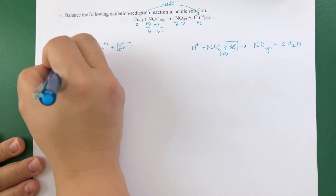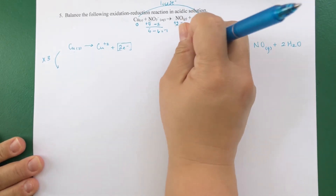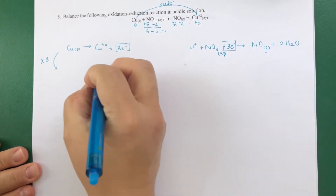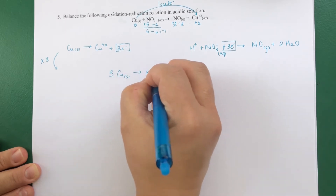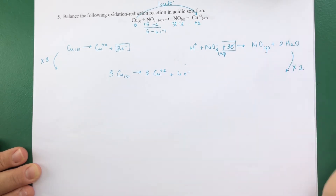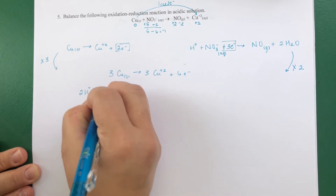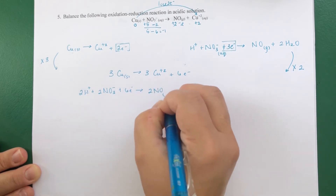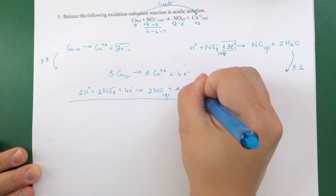Multiplying the copper half-reaction by three: 3Cu → 3Cu²⁺ + 6e⁻. Multiplying the nitrogen half-reaction by two: 2NO₃⁻ + 8H⁺ + 6e⁻ → 2NO + 4H₂O. Wait — when multiplying the four hydrogens by two, that gives eight H⁺. Now I add these two scaled half-reactions together.